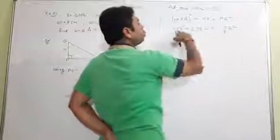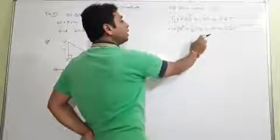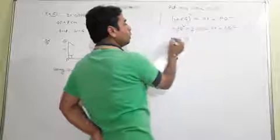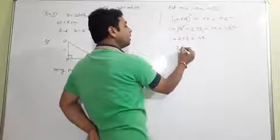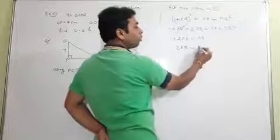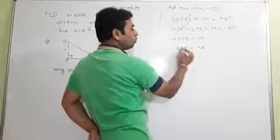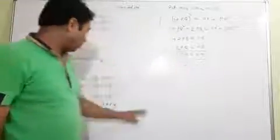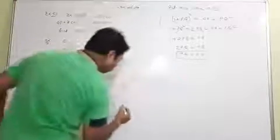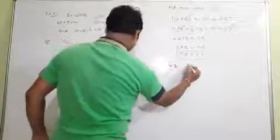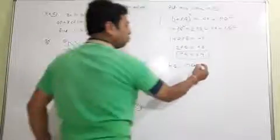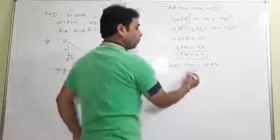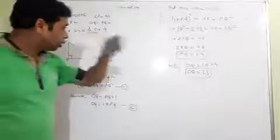Now PQ squared and PQ squared both cancel because both have a plus sign. Only remaining is 2PQ plus 1 equal to 49. So 49 minus 1 is 48, and PQ is equal to 48 upon 2, which is 24. You got the value of PQ. Now put PQ here and get OQ: OQ is equal to 1 plus 24.